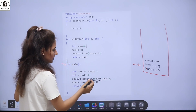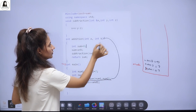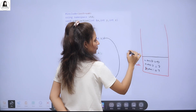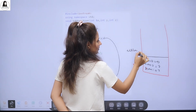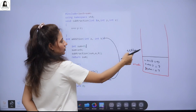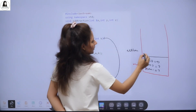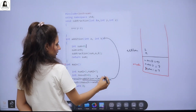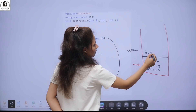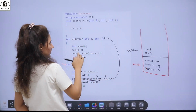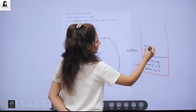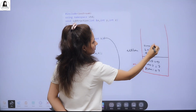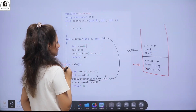Now control calls the addition function, so one more stack frame is created — this is now the active stack frame for addition. It has parameters int a and int b. Since num1 = 3 and num2 = 7, a gets 3 and b gets 7. There is also a local variable sum = 0. Then sum = a + b, so sum becomes 10.